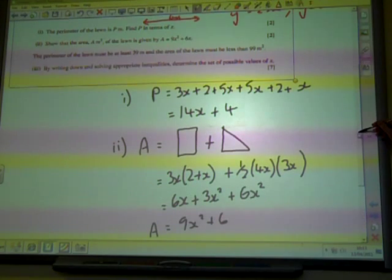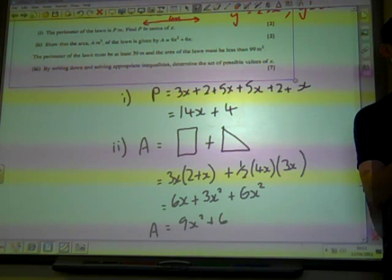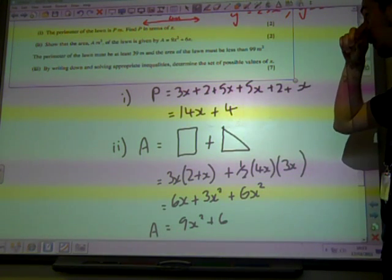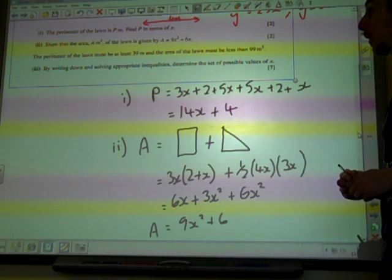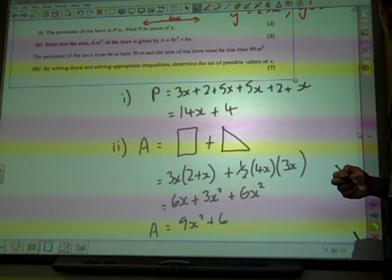There was a part 3, and part 3 was where we're really thinking of this one. We're given two more bits of information. The perimeter must be at least 39 meters, and the area must be less than 99. By writing down and solving appropriate inequalities, determine a set of possible values of X.